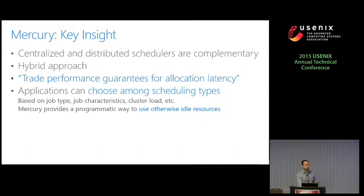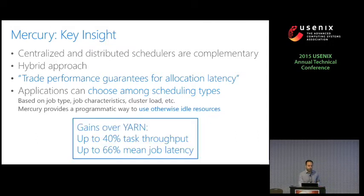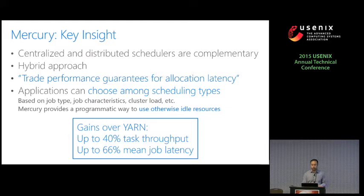Applications can now choose among different scheduling types. This can be done based on the job type — for example if you have an SLA job — the job characteristics such as whether a task is a mapper or reducer, the cluster load, and so on. Mercury provides a programmatic way to use resources that would otherwise remain idle. We have implemented the system and compared it with YARN, achieving up to 40% better cluster task throughput and up to 66% better average job latency.